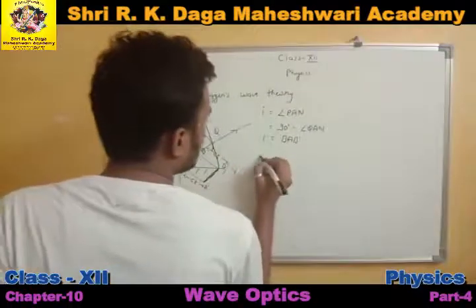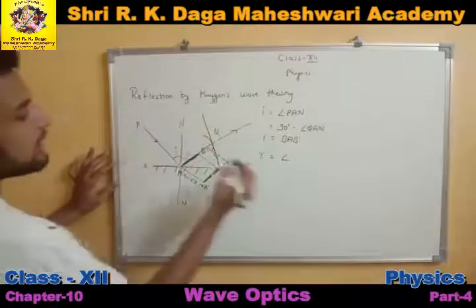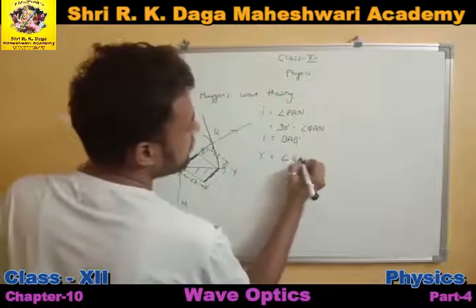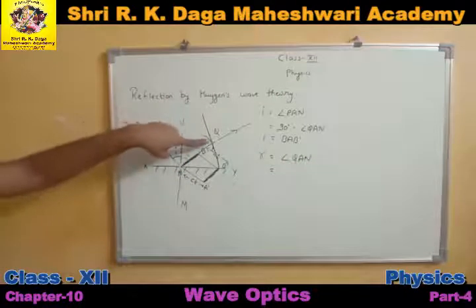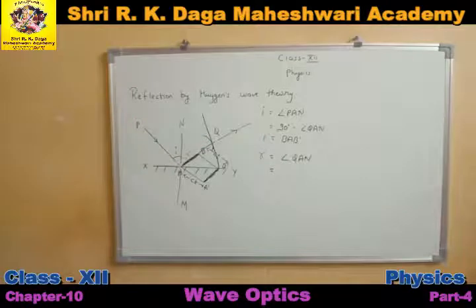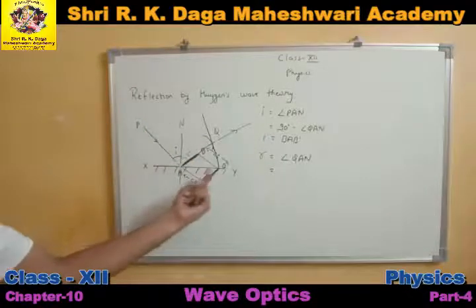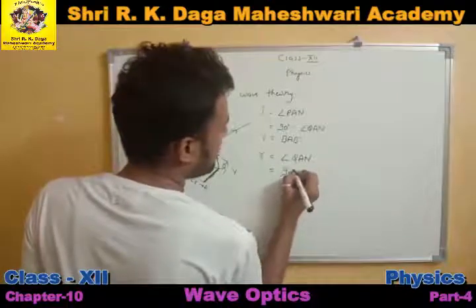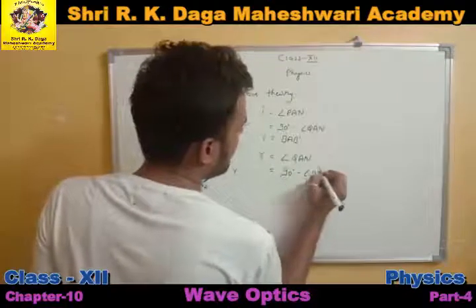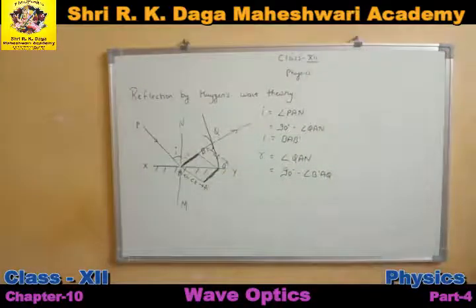Now, the angle of reflection — what is our angle of reflection? The angle of reflection is angle QAN. So I can write QAN as 90 minus B'AQ. This means QAN equals 90 minus angle B'AQ.